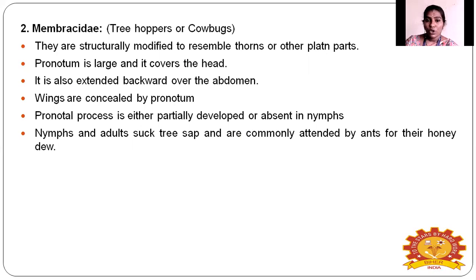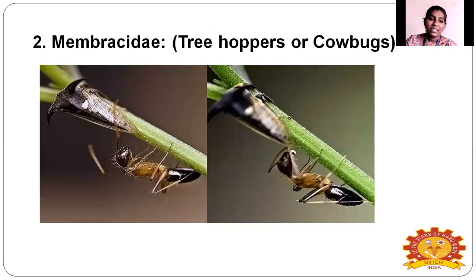Membracidae — the treehopper or cowper. They are structurally modified to resemble thorns or flattened parts. The pronotum is large and covers the head, extending backward over the abdomen, concealing the wings. The pronotal process is either partially developed or sometimes absent in nymphs. Both nymphs and adults suck sap from trees and are commonly attended by ants for their honeydew secretions.